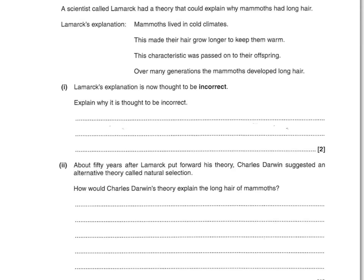Explain why Lamarck's explanation is thought to be incorrect. Two marks — any two of these: you could say that acquired characteristics do not have a genetic basis or can't be passed on. You could say the hair length is controlled by genes or DNA. And you could say that hair cannot be grown longer by mammoths when it's cold. Any two of those three things.